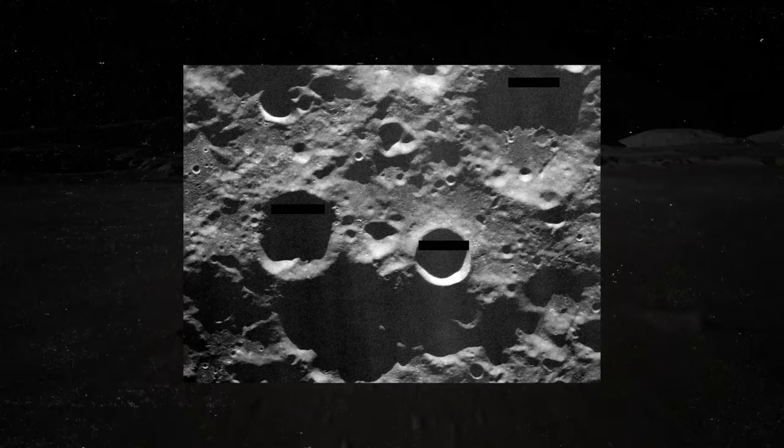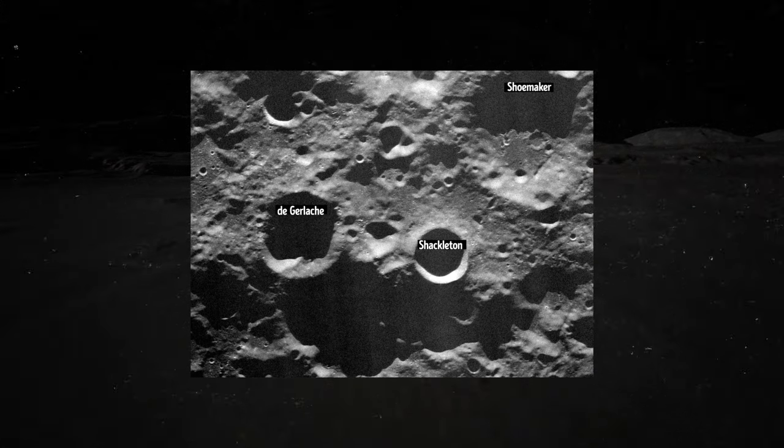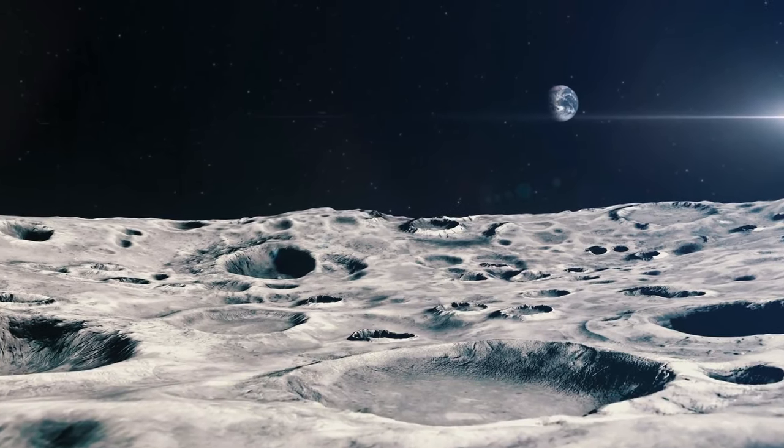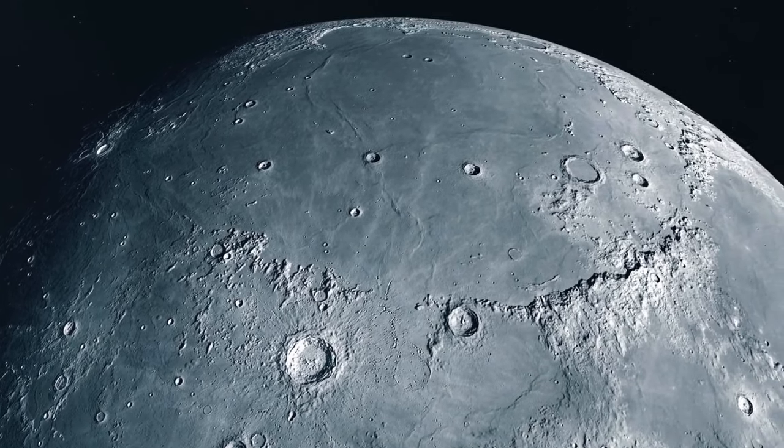In the 90s, NASA focused on these shadowed craters and found high concentrations of hydrogen, which meant there could be ice at the moon's poles. They still weren't certain, so they kept digging and, after a while, found hydrogen trapped inside tiny beads of volcanic glass.